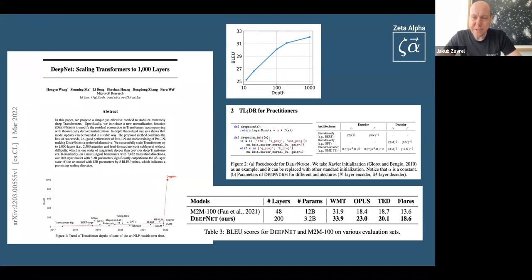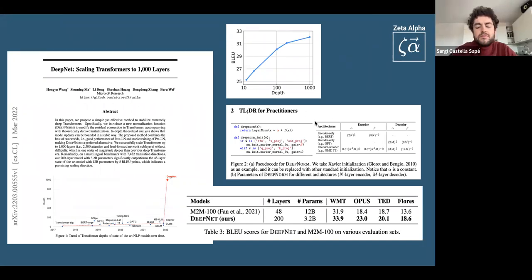But what they show is that there's actually a very interesting scaling behavior. That if you keep the number of parameters constant and you increase the depth of the network, they test this on a very challenging machine translation dataset, multilingual, massively multilingual machine translation. And they see a lot of improvement just by increasing the depth of the network. So that's a very interesting scaling factor. And all of that they do by just changing a few lines of code in the initialization of the network and in the normalization layers.